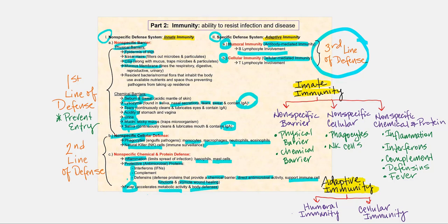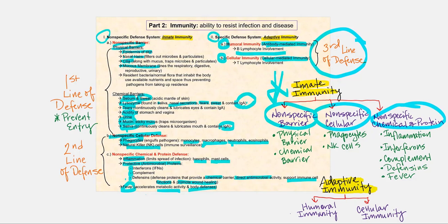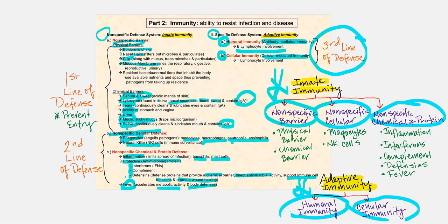If the B lymphocyte is involved, that's referred to as humoral immunity or antibody-mediated immunity. If the T lymphocytes are involved, we call that cellular immunity or cell-mediated immunity. Together, this is our third line of defense — the heavy guns. I've created a chart breaking down the components of innate immunity: nonspecific barrier, nonspecific cellular, and nonspecific chemical and protein defenses, with adaptive immunity — humoral immunity involving B cells and cellular immunity involving T cells — beneath that.